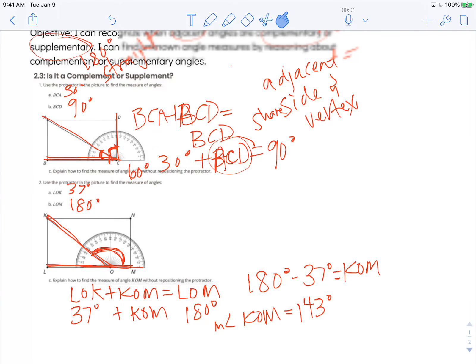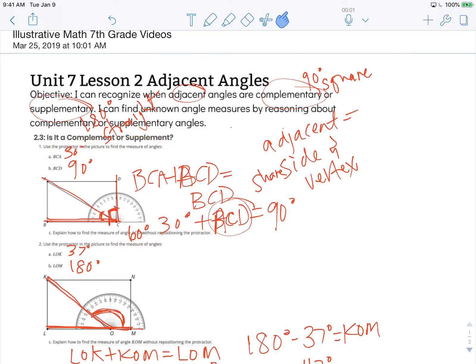Again, our objective for this lesson was: I can recognize when adjacent angles are complementary or supplementary. Again, adjacent meaning angles that share a side and a vertex. I can find unknown angle measures by reasoning about complementary or supplementary angles.